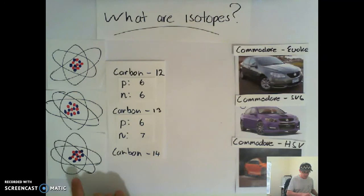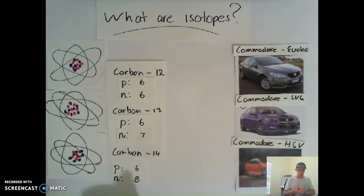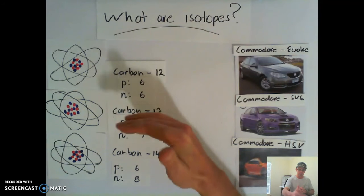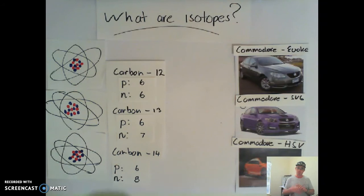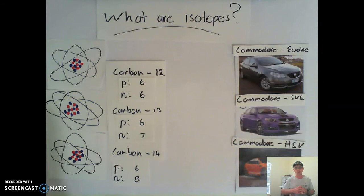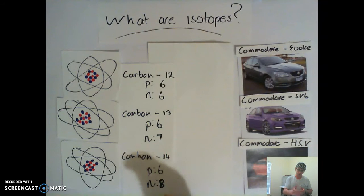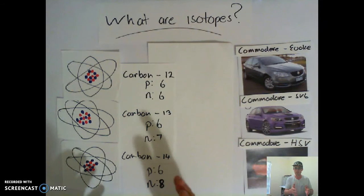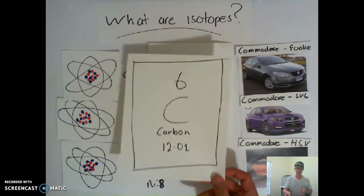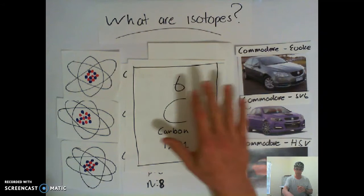And carbon-14 has six protons and eight neutrons. So they're all still carbon. They're all still models of carbon because any carbon atom must have six protons. And as we can see, all of our different models here have six protons, which makes them a carbon atom. But what makes them different — just like we have the different options within our Commodores — the different option within our carbon atoms is the amount of neutrons.